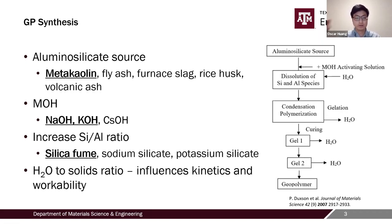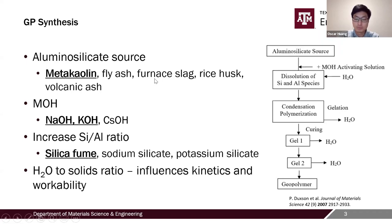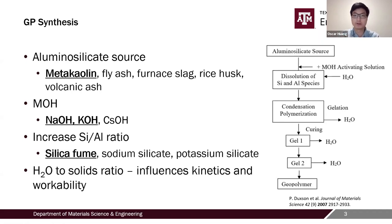The reason we're choosing metakaolin is because it is a relatively pure source of aluminosilicate — in our case, less than five percent impurity. By contrast, fly ash and furnace slag usually have various impurities such as magnesium oxide and calcium oxide, and their composition can vary depending on the source, making it difficult to reproduce results.